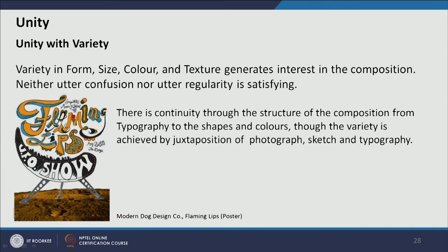This is a good example of unity with variety. There are different kinds of line qualities and variety in different colors, but still they are unified because of the curvilinearity of the line. The curvilinearity of the text and the shape match each other, and the yellow color repeated in two places creates repetition. The variety comes from the sketchy fonts and the contrast between those and the photographic realism of the bottom part.